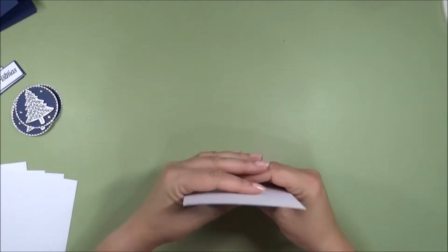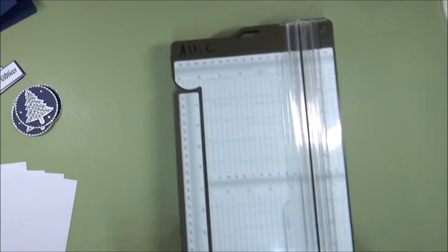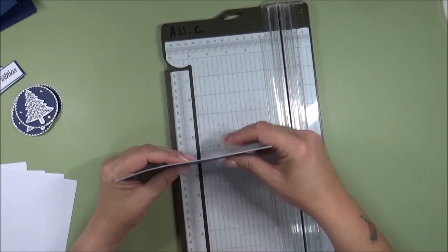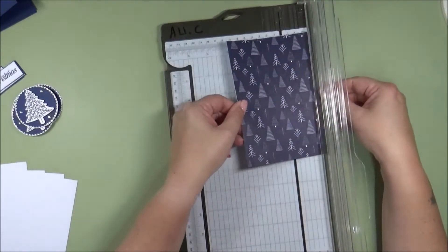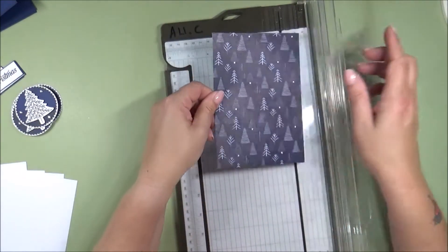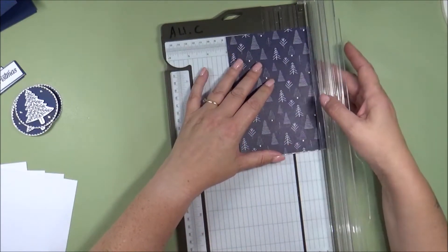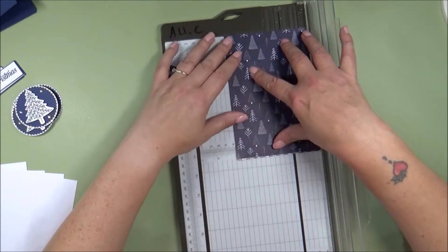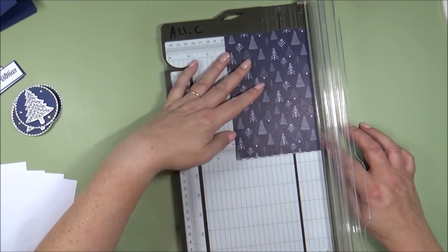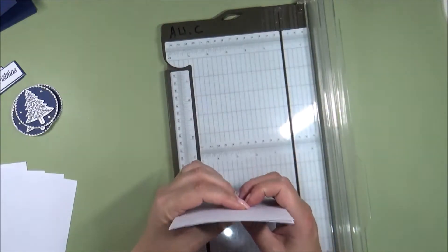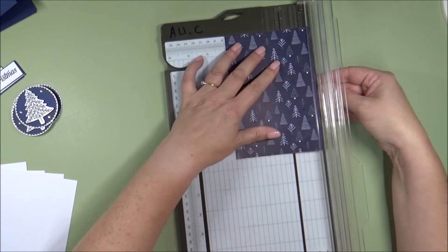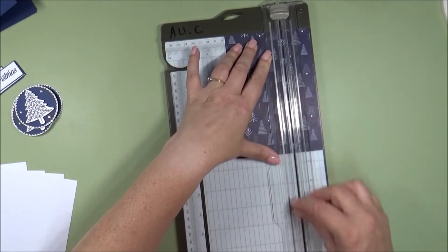So you want to bundle your pieces of cardstock together. So grab your trimmer, line up your pieces so that they're bundled together equally. Position it in your trimmer whilst trying to keep them bundled together. And we're going to make our first cut at 3 inches. It does want to move around a bit, so just try and keep them together as best as you can.